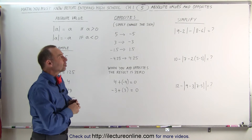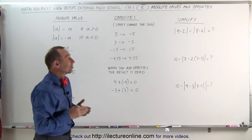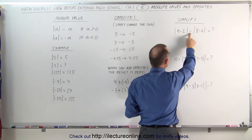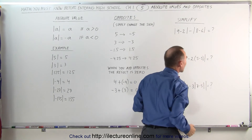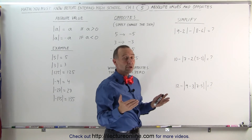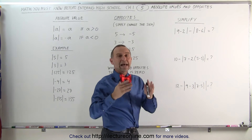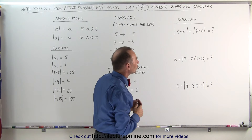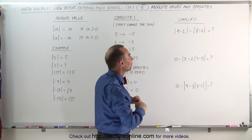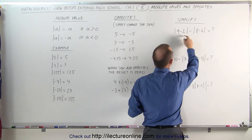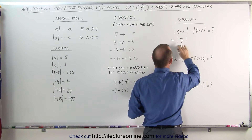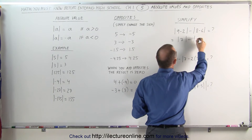The difficult part may come when you're trying to simplify expressions that have absolute value symbols in them. For example, the absolute value of 9 minus 2, subtract from that the absolute value of 8 minus 6. The way you simplify that is you use the same order of operations. Absolute value symbols act like parentheses — so you do what's inside them first. Here, 9 minus 2 becomes 7, and 8 minus 6 becomes 2.